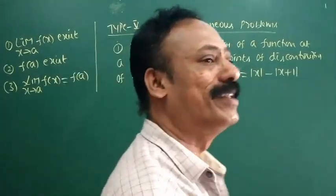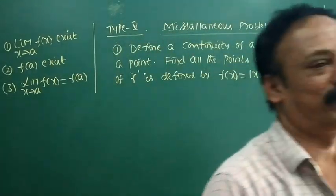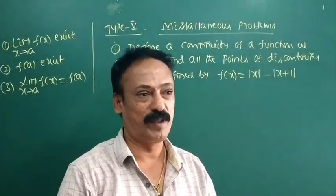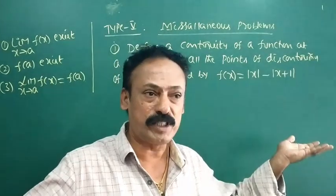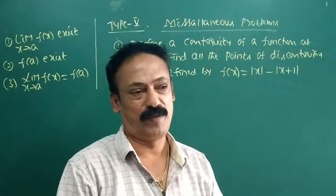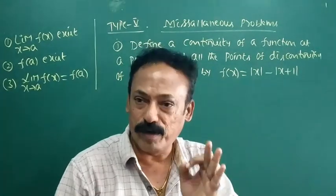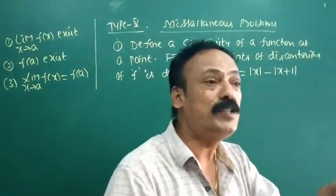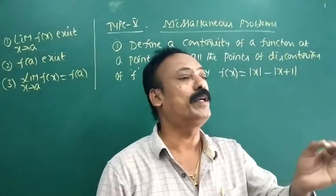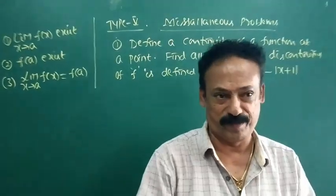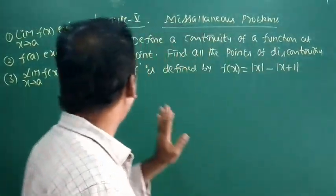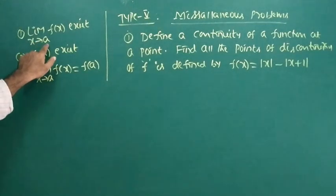Dear students, you know the definition of continuity. We discussed it in the first video. Let me recall the definition: a function f of x is said to be continuous at x is equal to e if it satisfies three conditions. The first one is: limit as x tends to e of f of x exists.